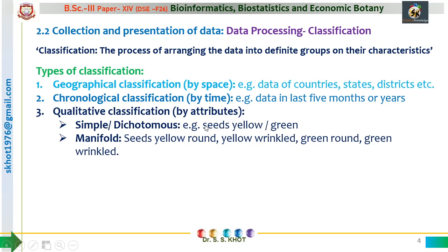The next type in qualitative classification is many-fold classification. Here, more than one character is considered at a single time. For example, along with the color of seed, we can also consider the nature of the seed. In this grouping, we first group by color — seeds yellow, seeds green — and then divide the yellow seeds into two types depending on the nature of the endosperm: yellow round and yellow wrinkled. Under green also, we have two divisions: green round and green wrinkled. So here we have considered two different characters — color and nature of the endosperm. Such classification is called many-fold qualitative classification.